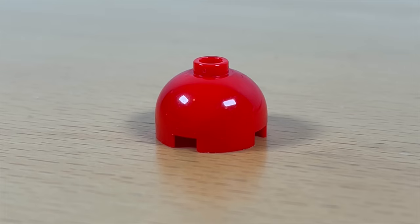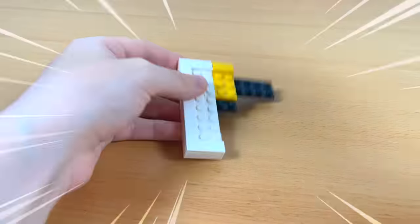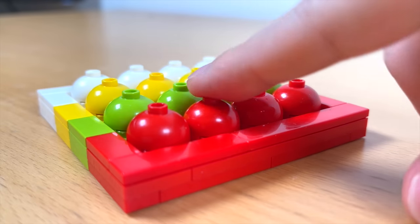For the bubbles, I'll be using these rounded dome bricks. For the color scheme, I'll try to make it colorful as the Pop-its usually have all kinds of colors. I then put it all together and voila!